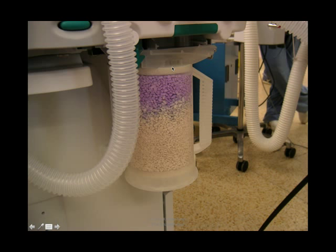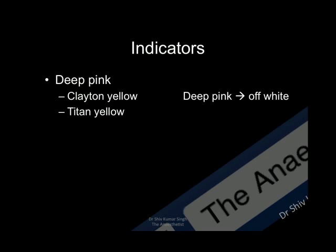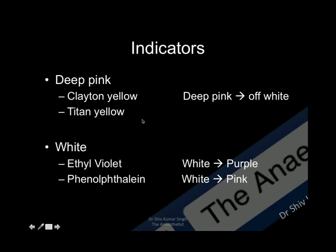This is a soda lime canister which shows the indicator converting from white to purple — that is the exhausted soda lime. There are various indicators and it's important to know which indicator is present in the soda lime you are using. Some soda limes are deep pink in color and become off-white when exhausted; the indicators in these are Clayton Yellow and Tartrazine Yellow. Other soda limes are white normally, with the indicator being thymol violet — which converts to purple on exhaustion — or phenolphthalein, which converts from white to pink when exhausted.